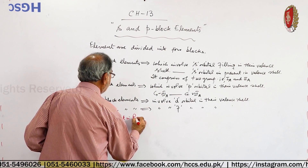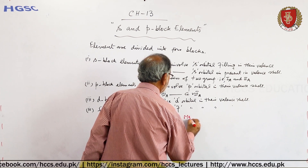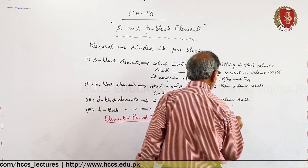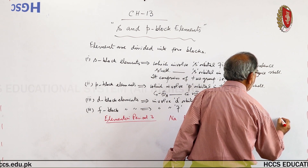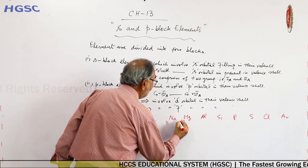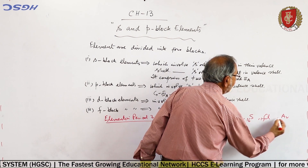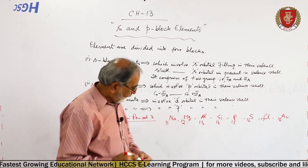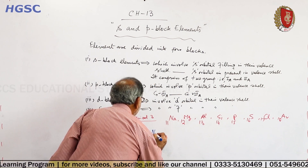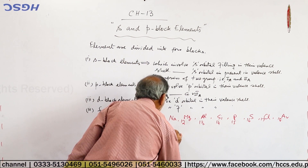Especially the elements in period 3: sodium, magnesium, aluminium, silicon, phosphorus, sulfur, chlorine, and argon. Their atomic numbers are 11, 12, 13, 14, 15, 16, 17, and 18.